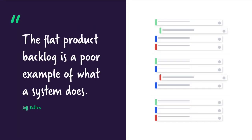Let's start off by talking about the origins of user story mapping: the flat product backlog. It's one of the common practices in agile software development. We've all seen them, we've all contributed to making them bigger, and we've inevitably drowned in them. In its simplest form, a flat product backlog is a laundry list of stuff to do that will ultimately provide some form of value to your users or customers.